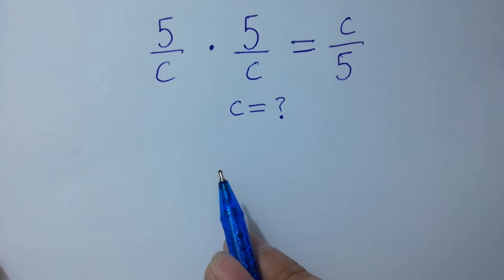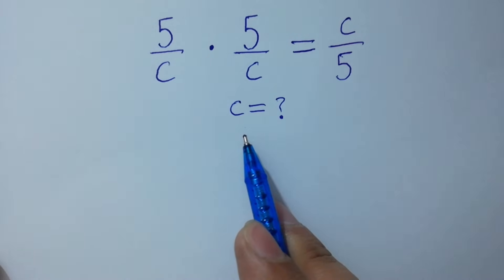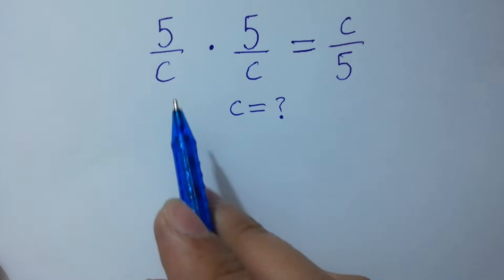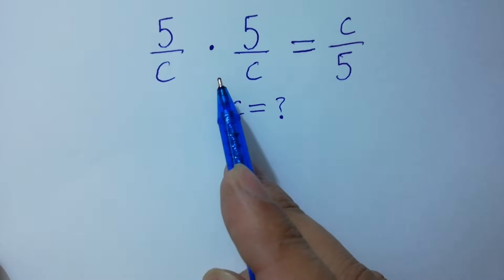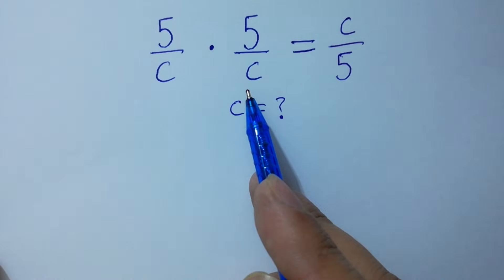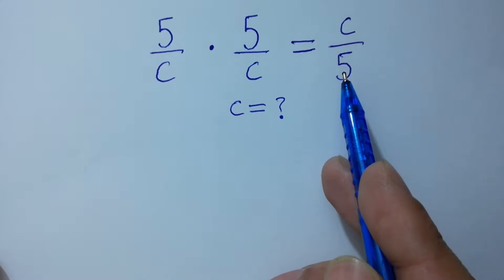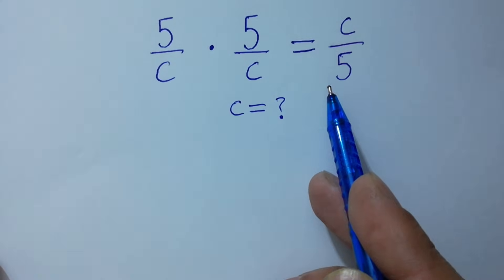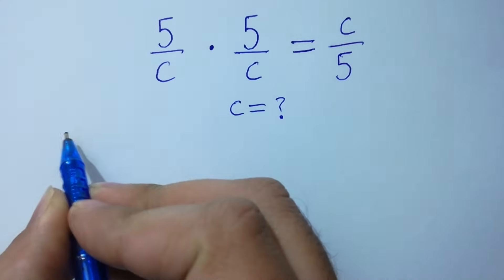Hello friends. Find the value of c if 5 over c times 5 over c equals c over 5. Let's have a solution.